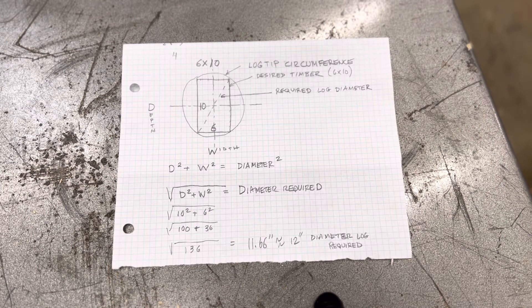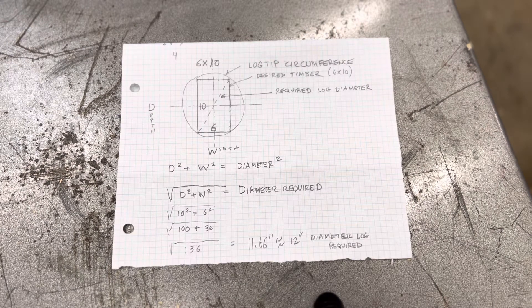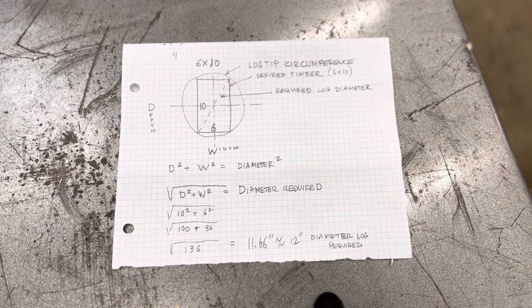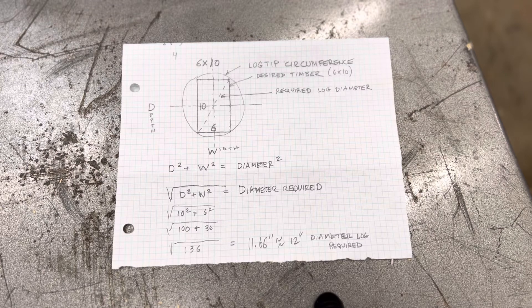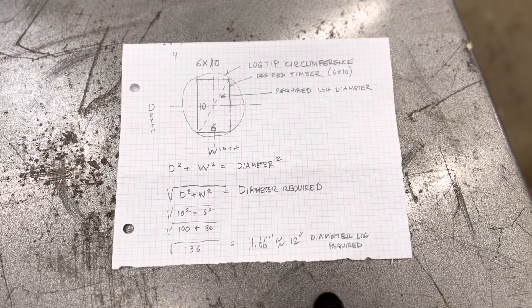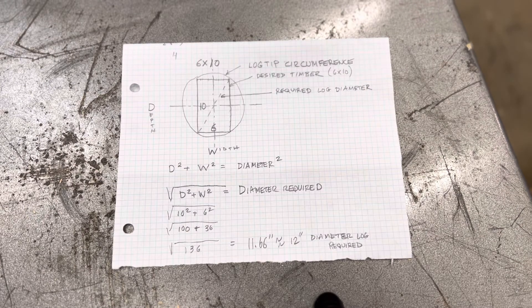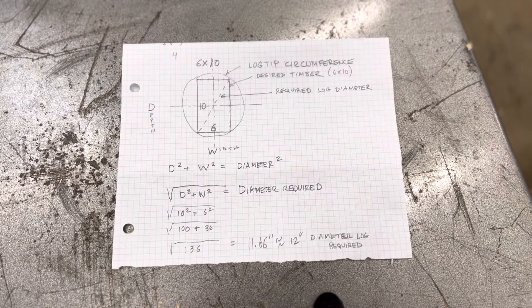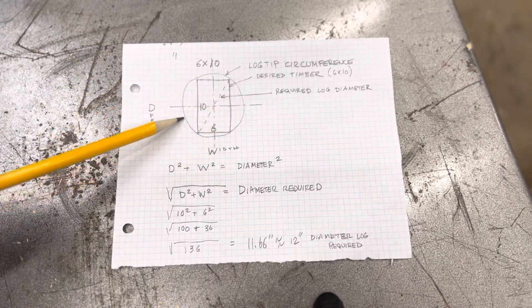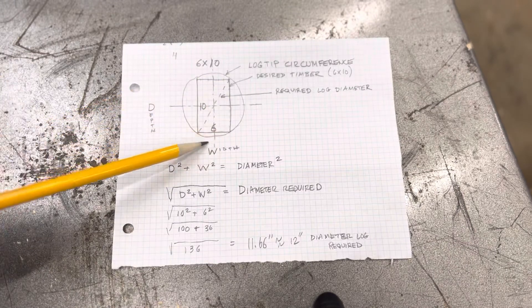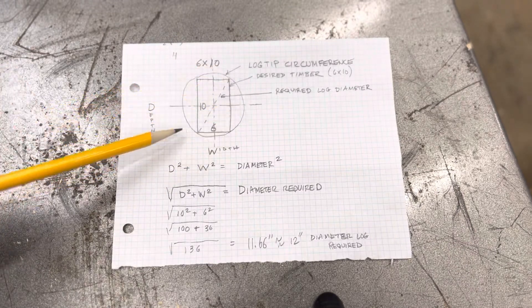So I want to go over something real quick, and what this is is how to calculate what size log is required to give you the size timber you need. So without a lot of ado here, looking at a picture I drew up, don't get all jazzed up on the math stuff, I'll go through that with you. What I've got right here is the outside diameter of the log drawn in, so what you need is a log and it's got to kind of be circular.